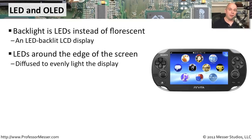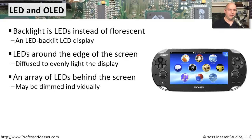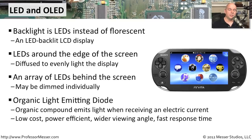This LED technology may be implemented a number of ways. One way is to have the LEDs around the edges of the screen, with a diffuser inside of the display that then evenly distributes that light throughout the entire back. Another way to implement this technology is with an entire array of LEDs — not just around the edges, but throughout the entire back of the display. That gives the display more control of lighting and darkening certain areas to make those blacks just a little bit blacker when you need them.